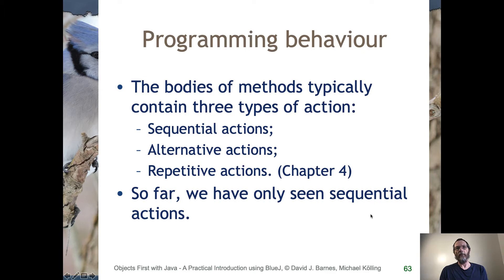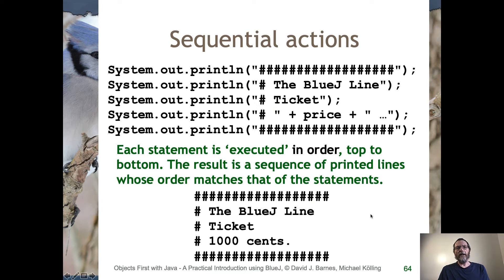We'll look in detail at repetitive actions when we get on to chapter four. So far in the course we've only seen sequential actions. Here's an example taken from the print ticket method of the ticket machine where we have a sequence of println statements. Each statement is executed in the order it's written from top to bottom. The first thing done is a line of hashes is printed, then the BlueJ line is printed, and so on through all five statements. The order of those lines in the terminal exactly matches the order of the println statements.